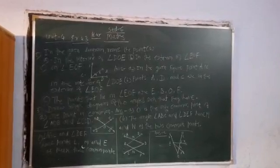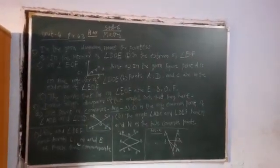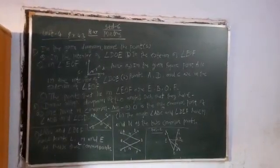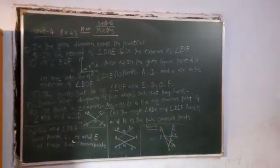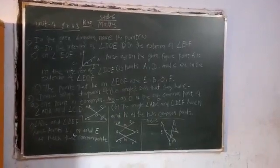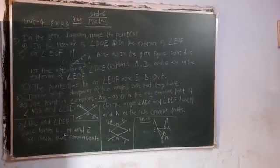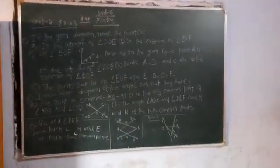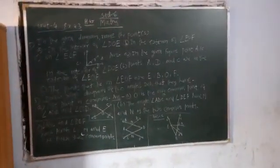Angles ABC and angle DEF have points L, M, and E as three common points. We can identify these common points. Thank you.